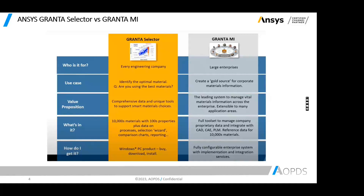MI, on the other hand, is more of an enterprise tool that provides more detail through material selection and management — it's primarily about the management side. With MI, you have an essentially unlimited number of materials you can log, which is useful if you're developing many materials in-house. MI is also fully customizable based on your organizational chart, access levels, and product development process.